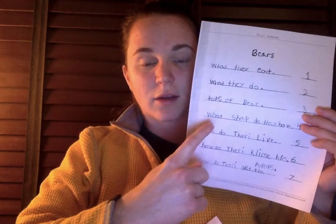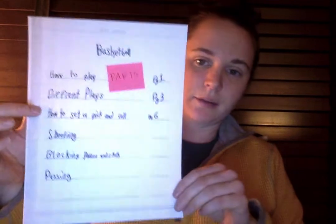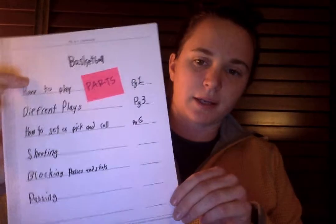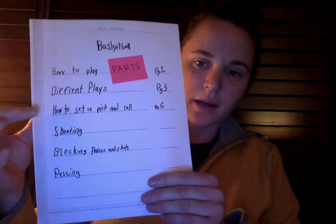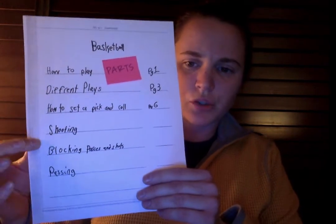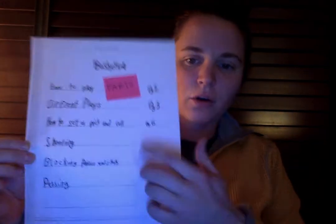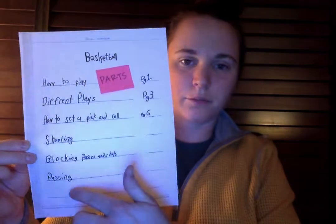You can see that all of these have structured their table of contents using questions and the who, what, where, when, why, and how framework. Your topic might also make you think in parts — like this person who wrote about basketball: how to play, different plays, how to set a pick and roll, shooting, blocking, passing. All of these are different skills or parts of basketball.